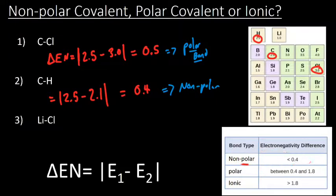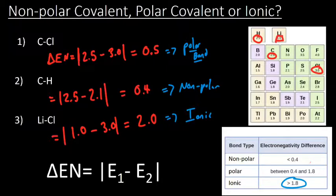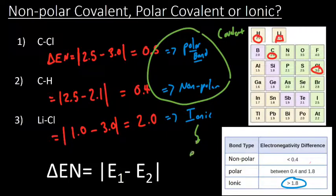Let's look at lithium and chlorine. Lithium has an electronegativity value of 1.0; we subtract chlorine's value of 3.0, and taking the absolute value gives us 2.0. On our chart, anything greater than 1.8 makes it ionic. So the C–Cl and C–H bonds we looked at are both covalent — they share electrons, either unequally (polar) or equally (nonpolar). But lithium and chlorine have such a large difference that the electron is fully transferred, making it ionic and no longer shared.